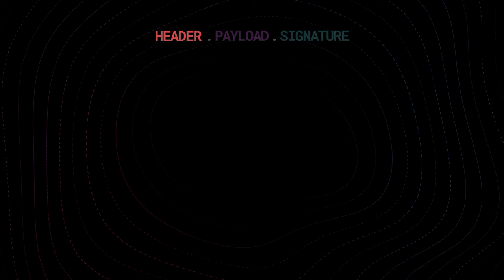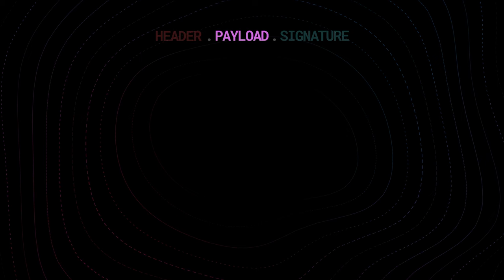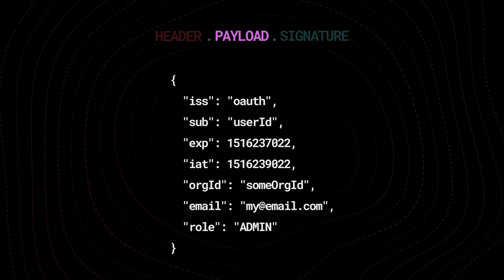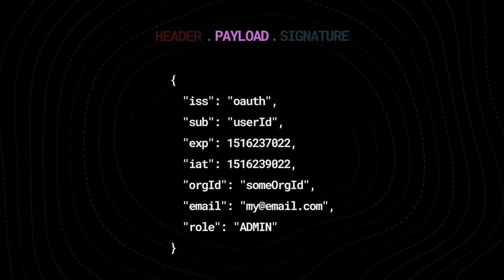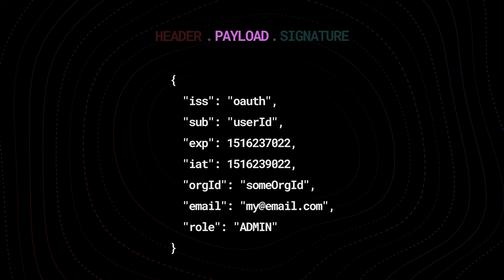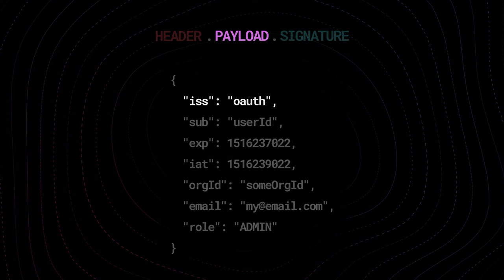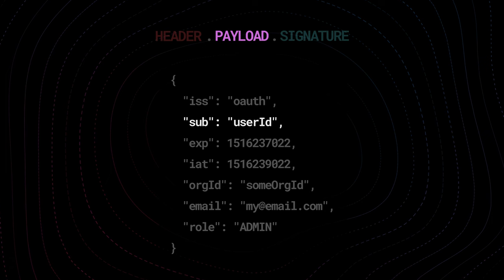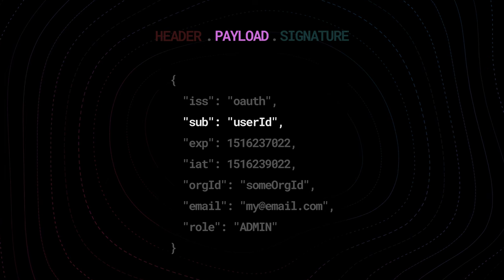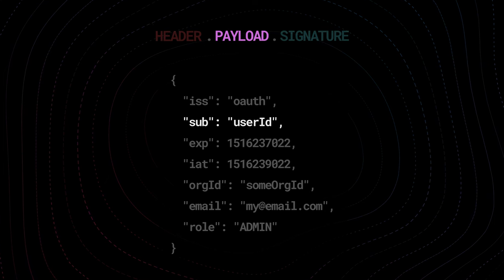The second part — the most interesting part — is the payload of the token. There are some recommended fields in the JWT standard that you'll pretty much always find in there. For example, the issuer field: who issued that token? Is it some authentication service or an OAuth provider? Then there is the subject.